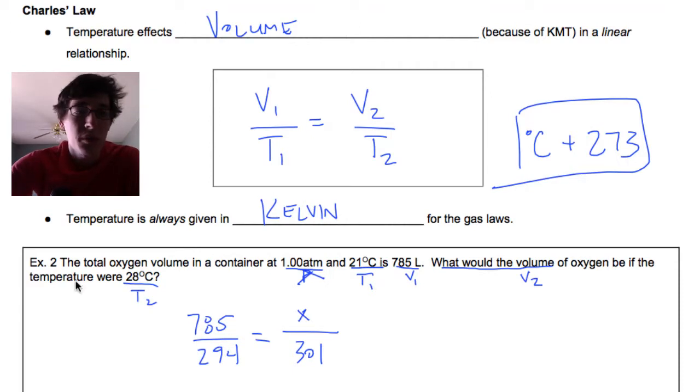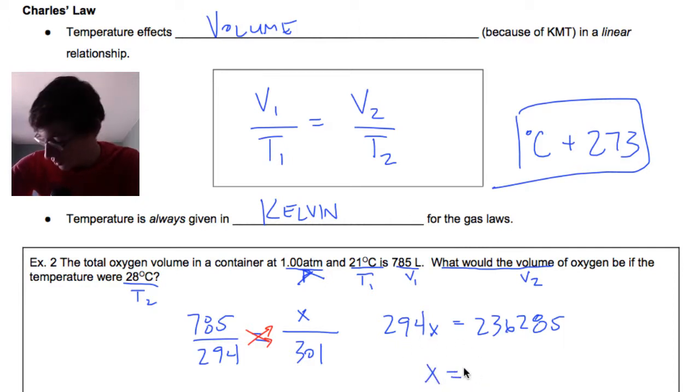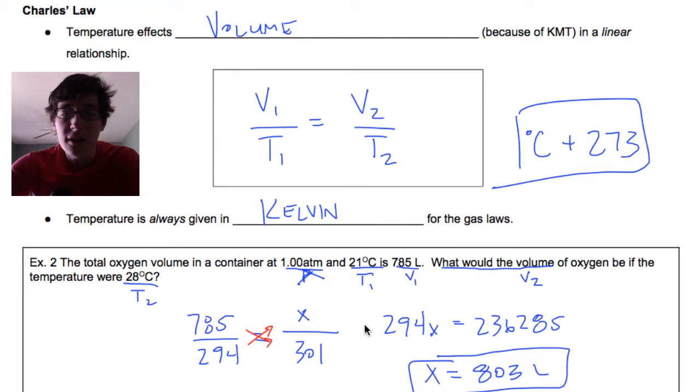To solve this one, we just cross multiply. When you're looking at an equation like this, we multiply top times the across bottom, bottom times the across top. That gives us the ratio of 294x equals 236,285. So 236,285, then we divide both by 294, and we get x equals 803 liters. Same idea. Notice here, as the temperature goes up, your volume also increased. So this is a direct relationship.